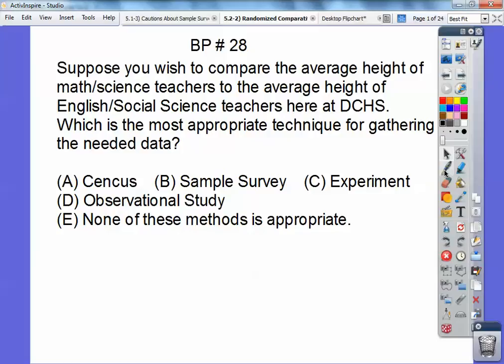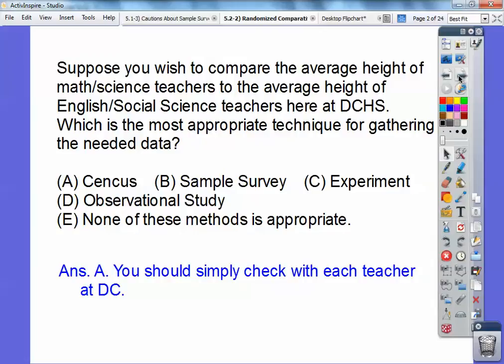Well, since there's probably 12 math teachers here and probably 10 science teachers here and roughly the same in the English and social science, the census would probably be your best ticket. Just go collect all the data from everybody on this. Experiments or sample surveys would be a poor choice when your census is so small as it is. So it would be, just check with each teacher. Let's continue.